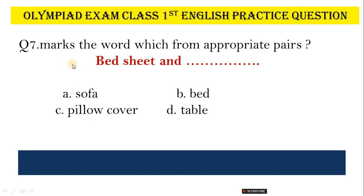Question No. 7. Mark the word which forms appropriate pairs. Given: Waves, Seat, and Desk. Options: A, Sofa; B, Way; C, Pillow cover; D, Table. Correct answer is Option D, Table.